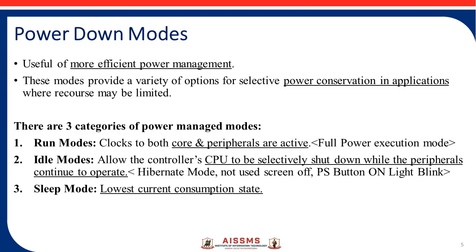The first power down mode is run mode. In run mode, clocks, the CPU, peripheral devices — all things are active. Run mode is the full power execution mode, meaning your CPU is working properly, your computer is working properly, and everything is working as per the clock cycle. There is proper power supply for each and every application. This is called running mode.